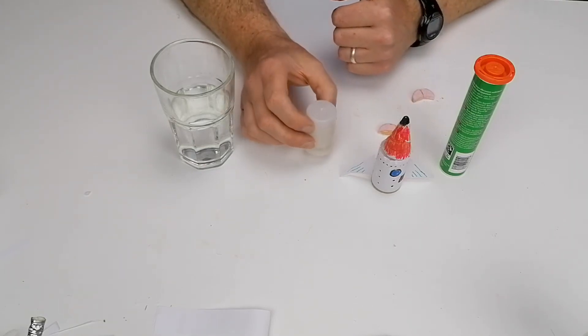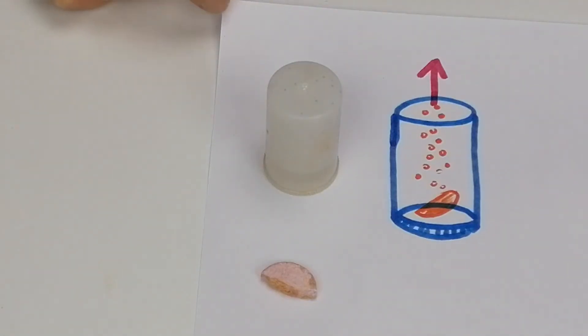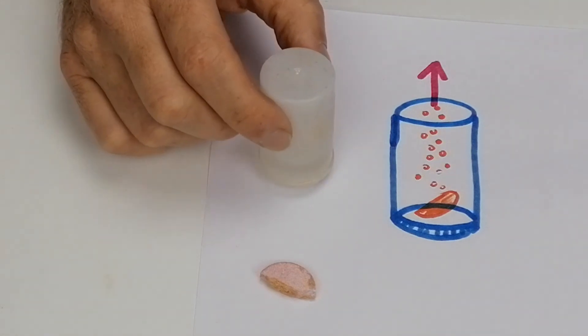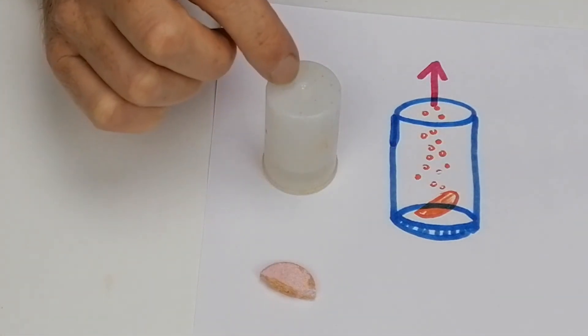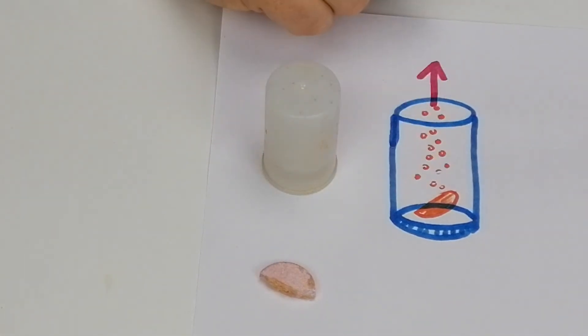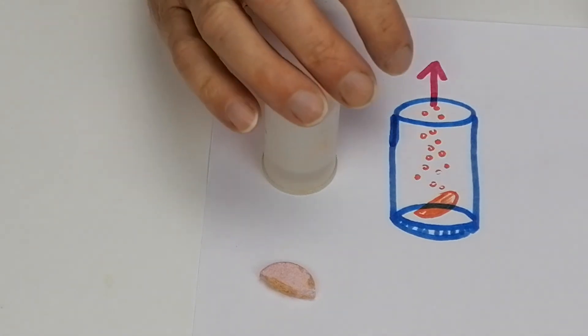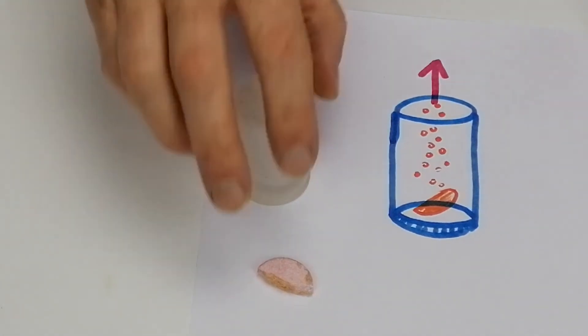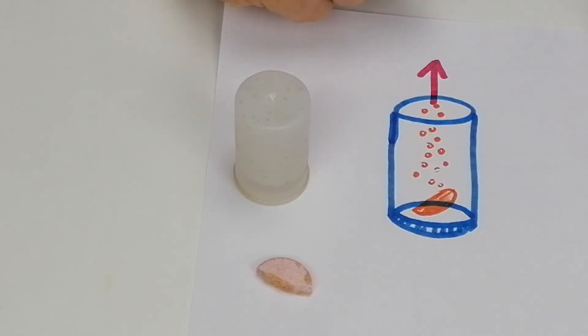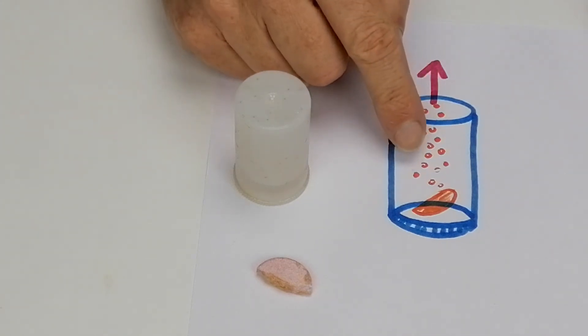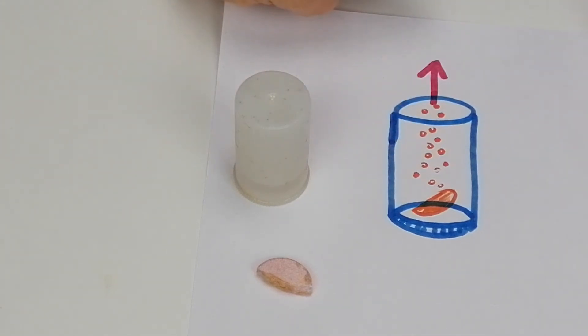Just to explain the science behind the pop rocket: when you put the vitamin C tablet into the water what happens is it effervesces. That means it breaks down and releases a gas. These little bubbles that come off when you add it to water, that's carbon dioxide, the same sort of bubbles you would have in a soft drink.